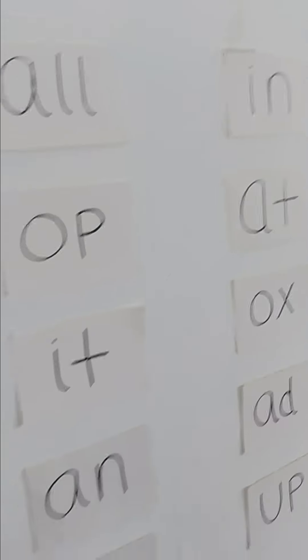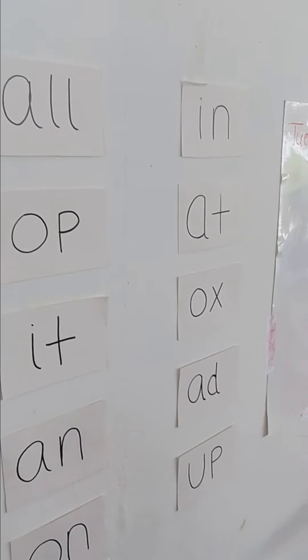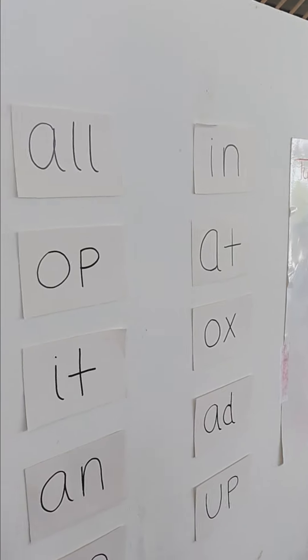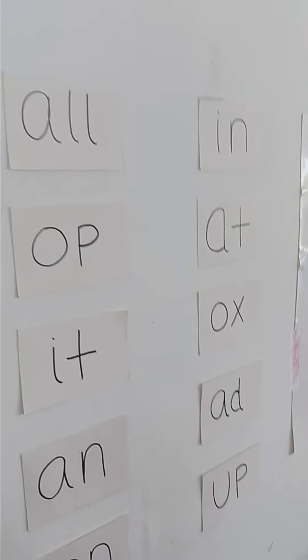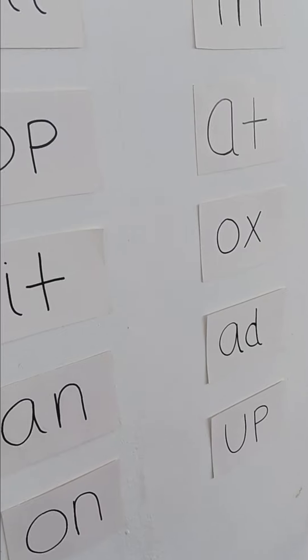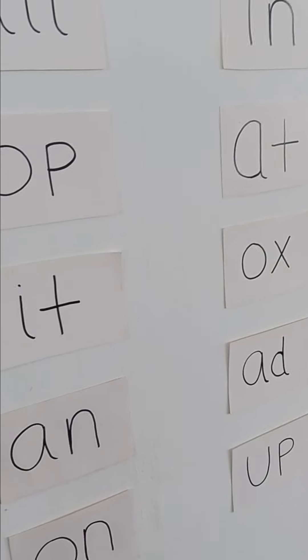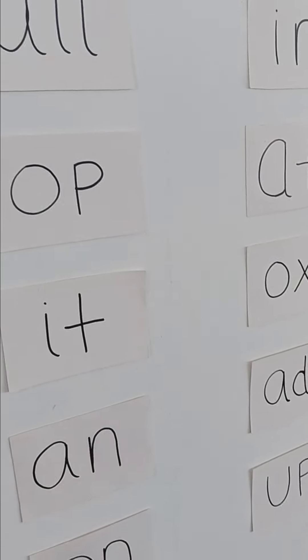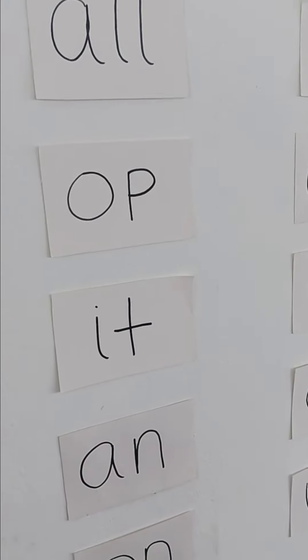Okay, cool. So how do you spell all? A-L-L. And how do you spell up? U-P. Up. Up. Which one's up? Up. Up. Up. This one's up.